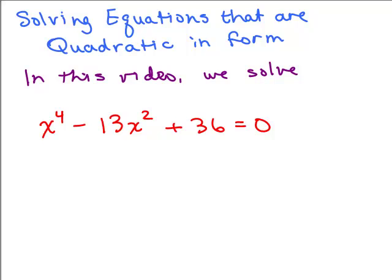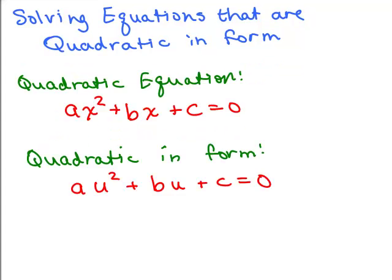In this video we solve an equation that is quadratic in form. A standard quadratic equation has the form ax squared plus bx plus c equals 0. An equation that's quadratic in form means it can be written as au squared plus bu plus c, but u could be something different than just a single variable.